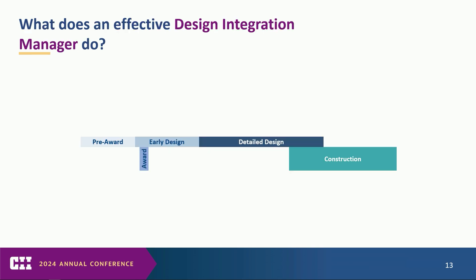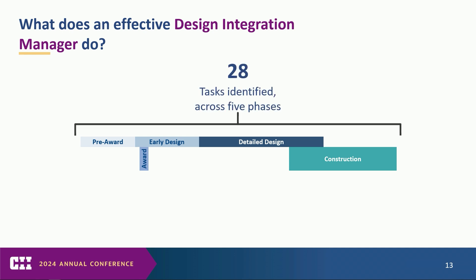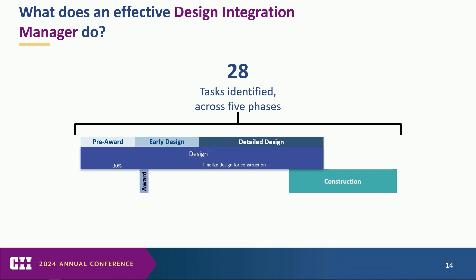What does this design integration manager actually do? We tried to break a project down into agnostic phases, because the EPC world is different from the building world. We identified five basic phases: pre-award, award, early design, detailed design, and construction. Phase names change a little depending on the sector. Across all those phases, we identified 28 different tasks. If we look at a traditional design-build process — not quite the progressive model Judy described, but a fixed-price design-build model — this is where those phases fall.